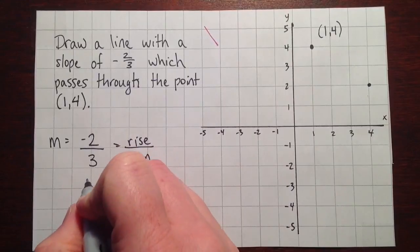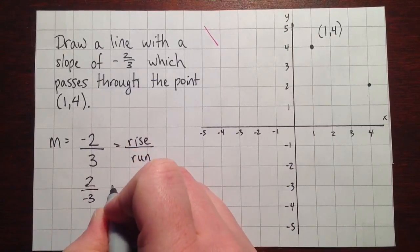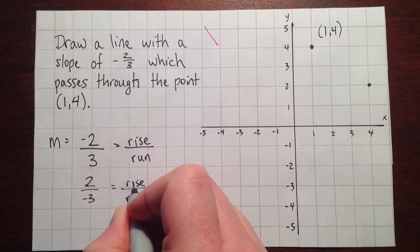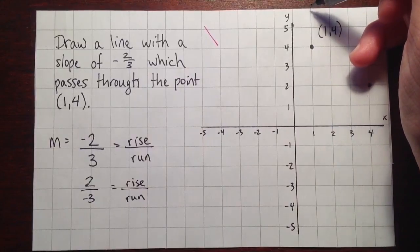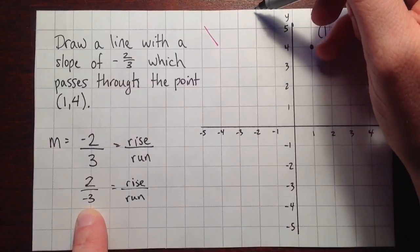If we did it in the other order, if we said that our negative 2 thirds was 2 over negative 3, which is totally fair to do, we go up 2, and then we do a run of negative 3. 1, 2, 3.